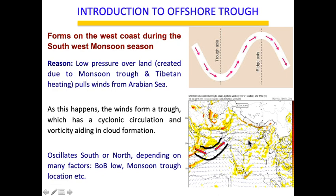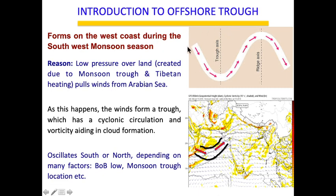Beyond the Ghats, the trough has lost its essence and the ridge pattern disintegrates the cloud bands. The trough has a cyclonic circulation with positive vorticity — when the wind pattern dips and rises, it creates positive vorticity, meaning enhanced low pressure. Vorticity aids in convection and updraft of clouds, further supporting cloud development and rainfall.